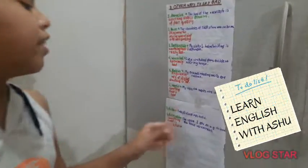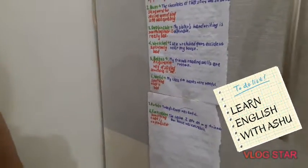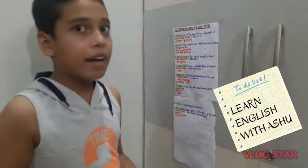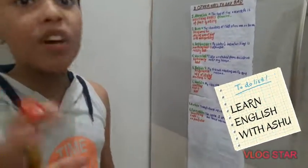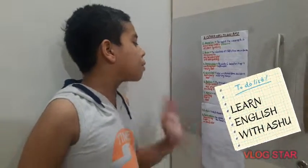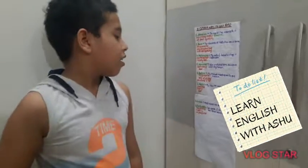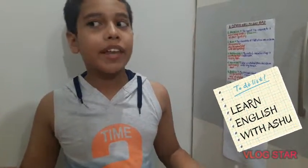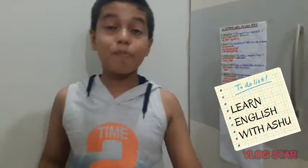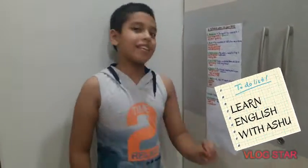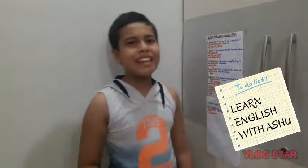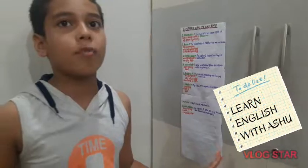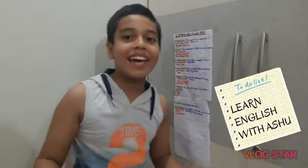Our next word is 'execrable', pronounced as 'execrable'. The meaning of execrable is something that is unpleasant. If you don't like something — like a chocolate that your friend made at home was very bad, extremely bad, unpleasant — you can use execrable. For example: 'The cake I ate at my friend's house was execrable,' meaning it was unpleasant or bad.